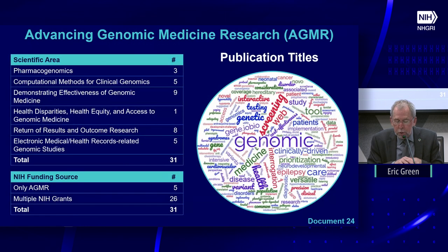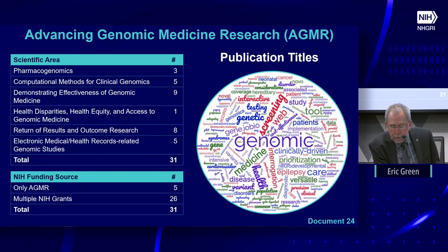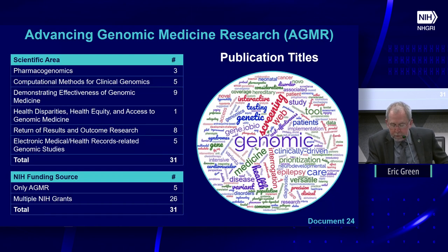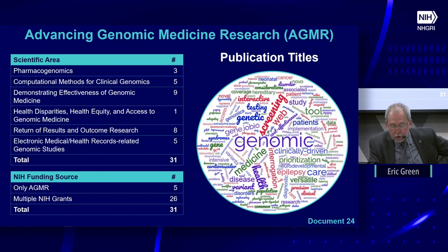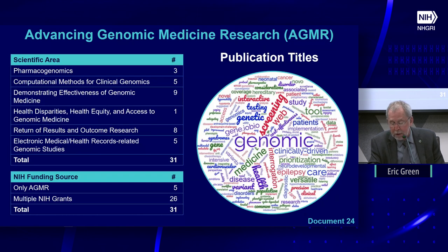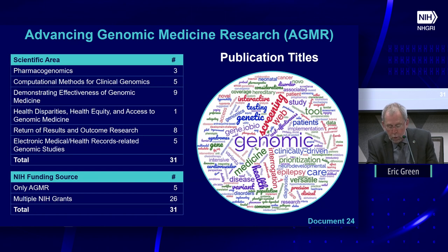The Advancing Genomic Medicine Research (AGMR) program recently completed its third year. AGMR encourages applications that stimulate innovation and advance understanding of when, where, and how best to implement genomic information and technologies in clinical care in ways broadly applicable across genomic medicine. The funded research has already resulted in 31 publications spanning multiple scientific areas, with five solely funded by NHGRI. A word cloud generated from the titles of those 31 publications is also shown.